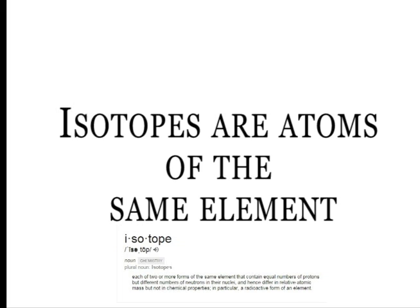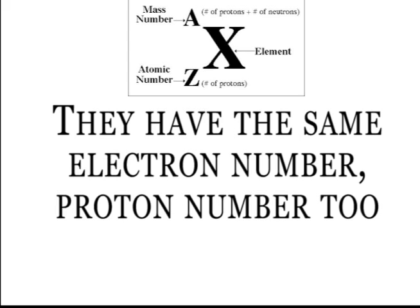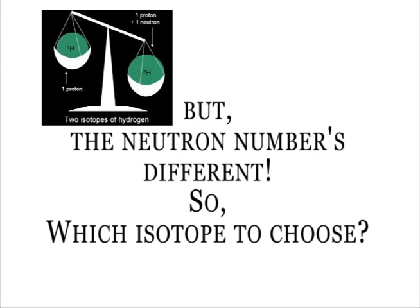Isotopes are atoms of the same elements — some numbers are the same, but two are different. They have the same electron number, proton number too. But the neutron number's different, so it's isotope to choose.